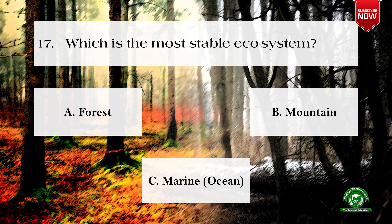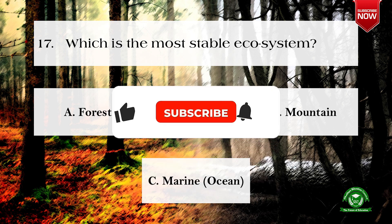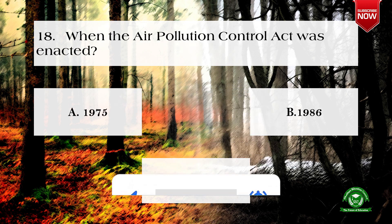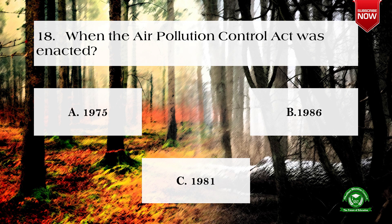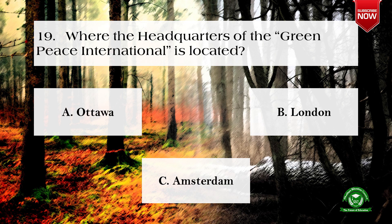Next question: which is the most stable ecosystem? Options are: forest, mountain, and marine. The correct option is c) marine. Next question: when was the Air Pollution Control Act enacted? Options are: 1975, 1986, and 1981. The right option is c) 1981.